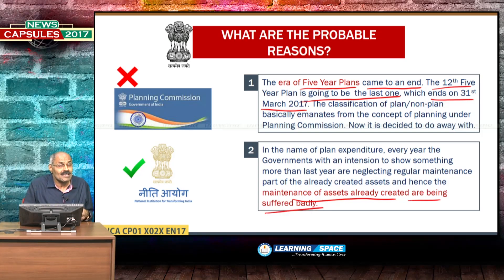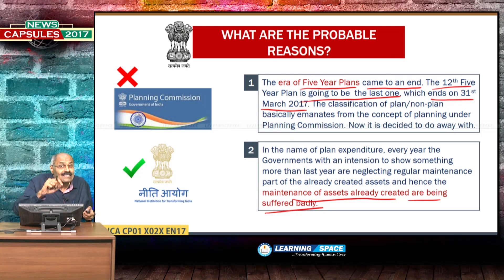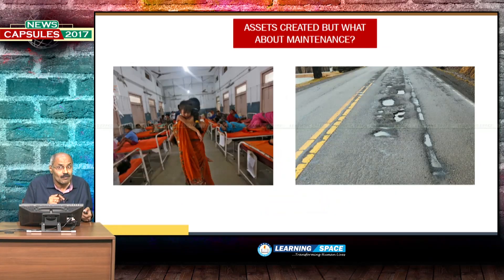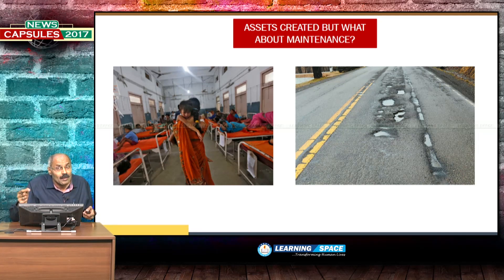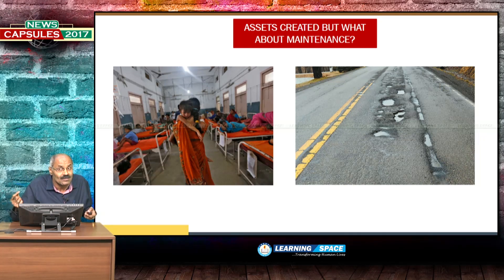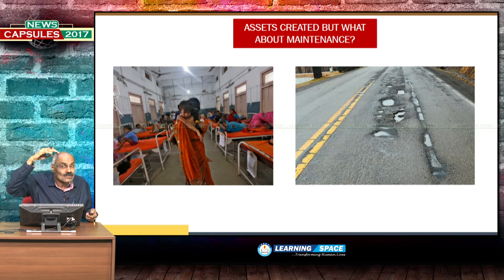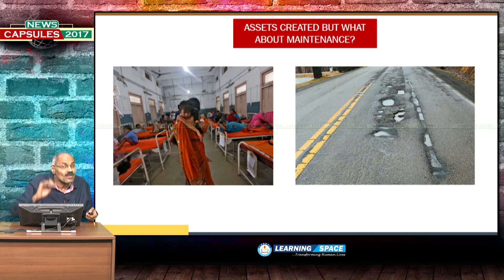In the budget, the emphasis of every finance minister is to show higher figures compared to last year. In that process, maintenance of assets is badly compromised. After constructing a hospital or a highway, maintenance is also very important — maintenance of assets comes under revenue expenditure. Without properly maintaining the assets, there is no point in creating them. So in the name of increasing plan expenditure, or what you can call incrementalism, this maintenance is being compromised — and that is the biggest problem.